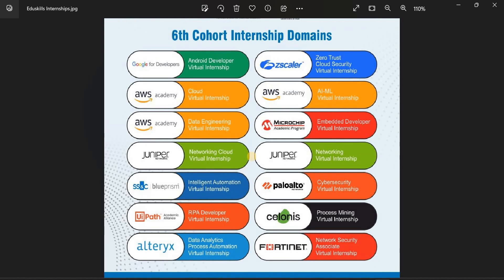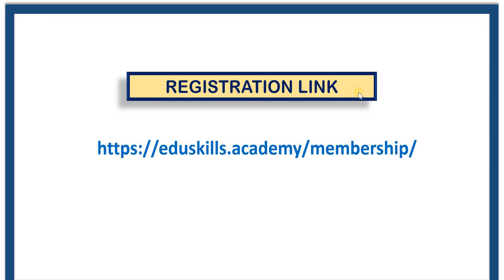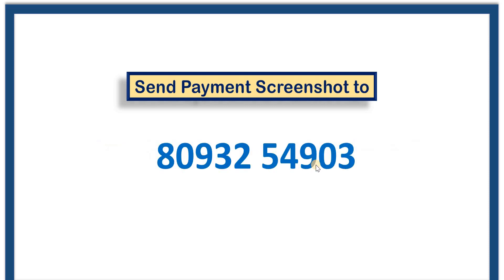Now I will tell you how to apply for these internships for 200 rupees. This is the registration link — I will give this registration link in the description. You simply click on that link and follow the instructions. First it will ask you to enter all your details, and after that it will ask you to pay 200 rupees. After paying the amount, take a screenshot of the payment and send that screenshot to this phone number 80932-54903. Immediately they will call you and guide you how to apply for the internships. Students, don't miss this opportunity, and try to share this information with your friends.